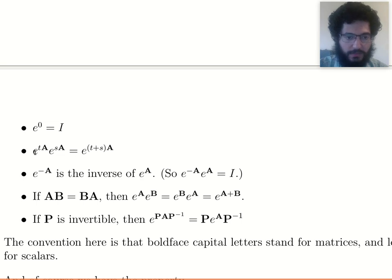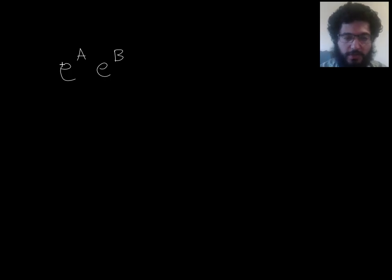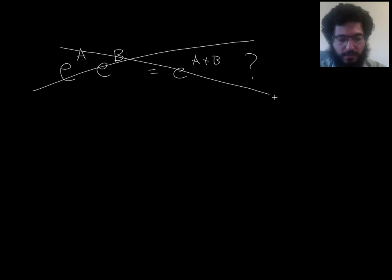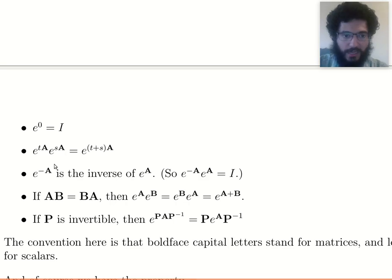You might hope that e to a matrix times e to another matrix, assuming they're both n by n matrices, would be e to the sum of the matrices, right? But unfortunately, it does not always work that way. It's a lot more complicated. However, if it's the same matrix, and you just have like a T here and an S here, like different scalars, then it does work to do this.